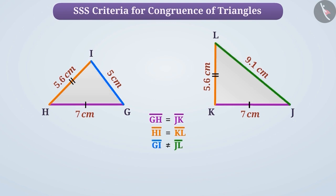Hence, SSS congruence rule is not applied, which concludes that triangle GHI and triangle JKL are not congruent.